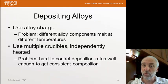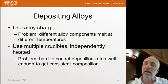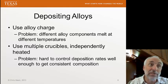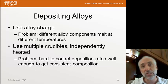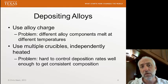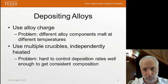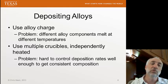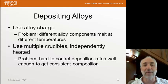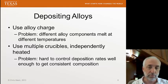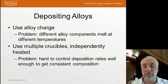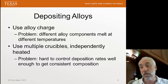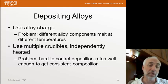We can use evaporation for depositing alloys as well by simply putting an alloy in the charge. However, alloys have different components that can melt at different temperatures and have different evaporation rates, so the composition of the deposited material may not match the composition put in the crucible. One solution is to use multiple independently heated crucibles, controlling the temperature to adjust the evaporation rates of individual components. But that's hard to do — controlling deposition rate is difficult because temperature is hard to control accurately enough, making it difficult to achieve a consistent alloy composition.